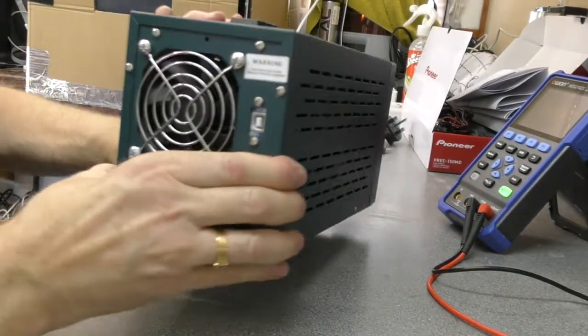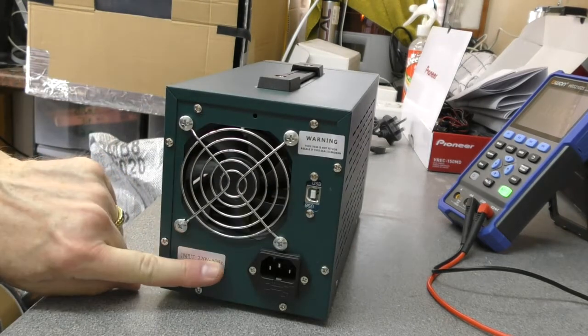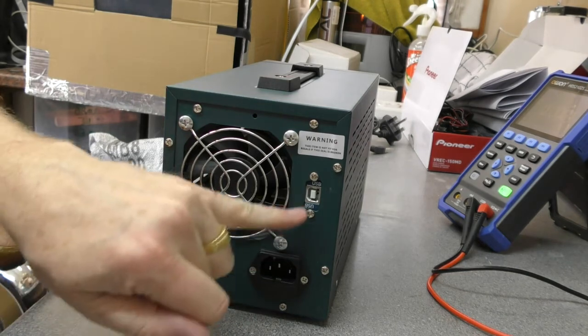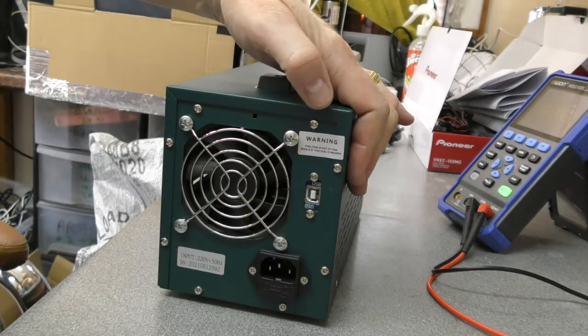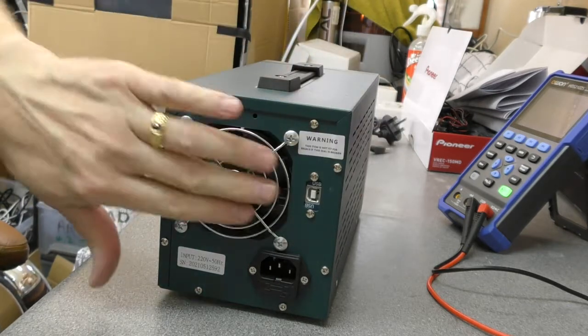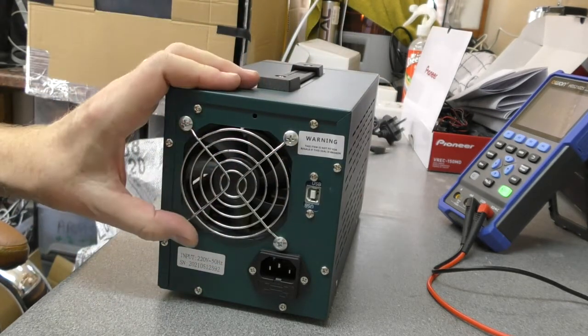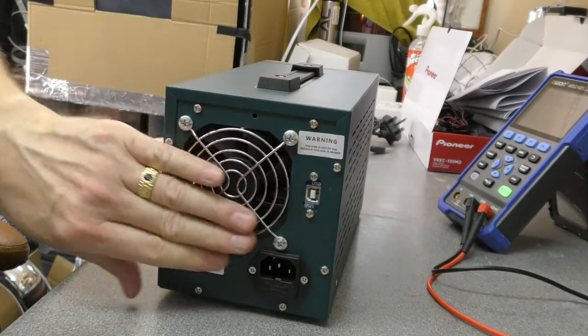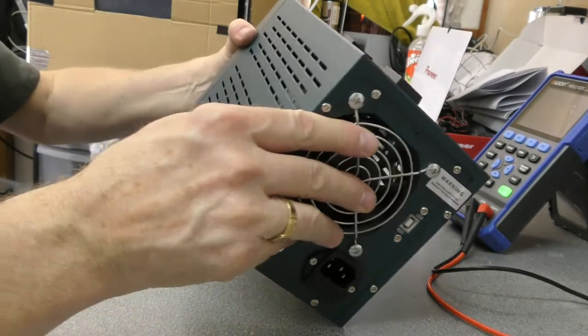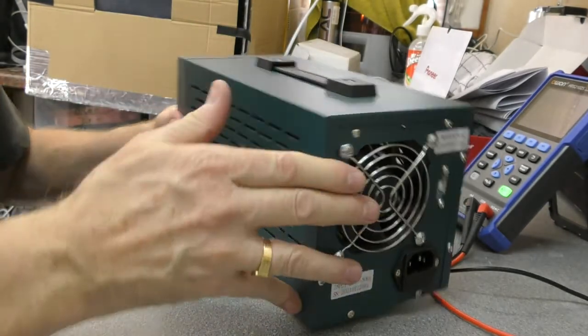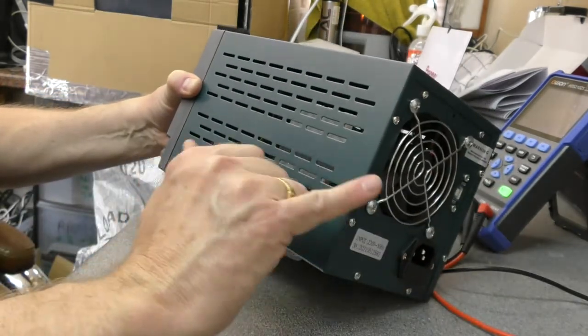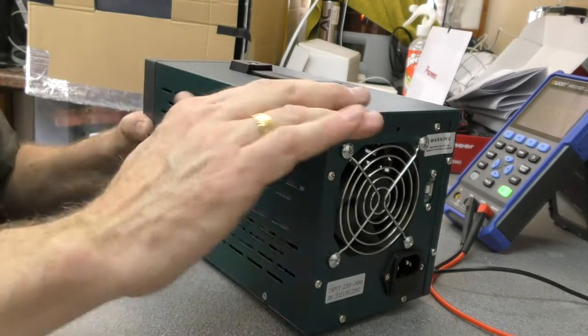On the back we have the serial number. The input which is fused. USB. And there's a warning about do not remove that label. Quite a large fan. It would be interesting to see whether that is on all the time or whether it is thermistor controlled. Nice metal case. And my colour blindness isn't exactly assisting in that colour. I suspect it is a greeny colour.